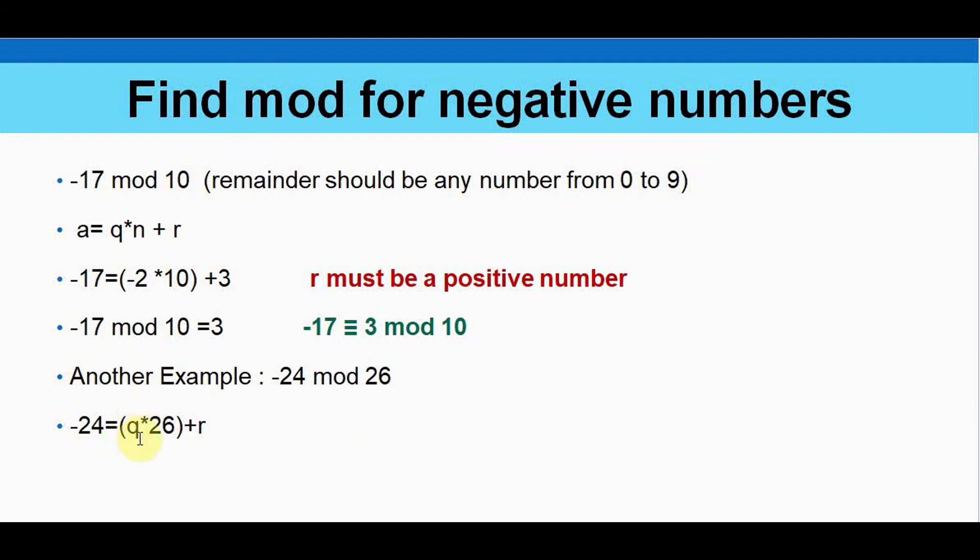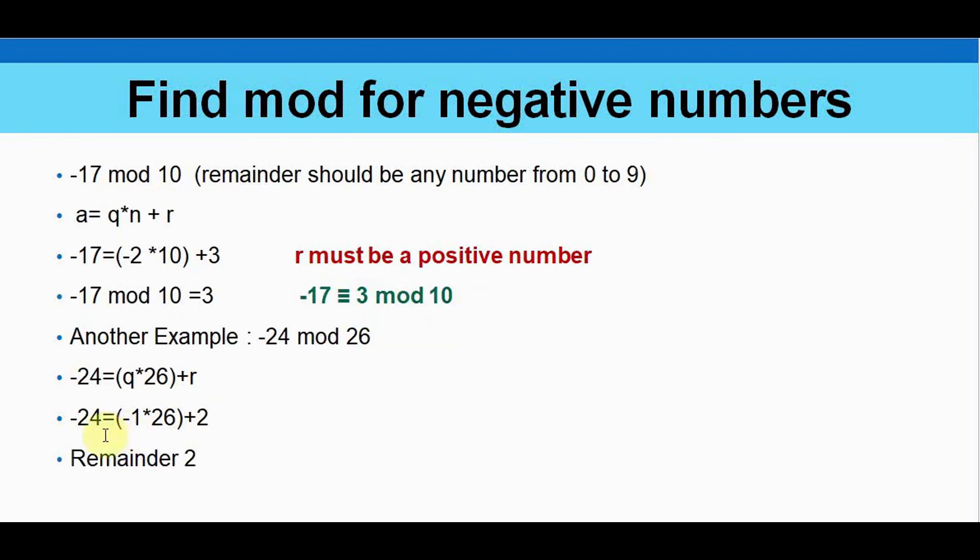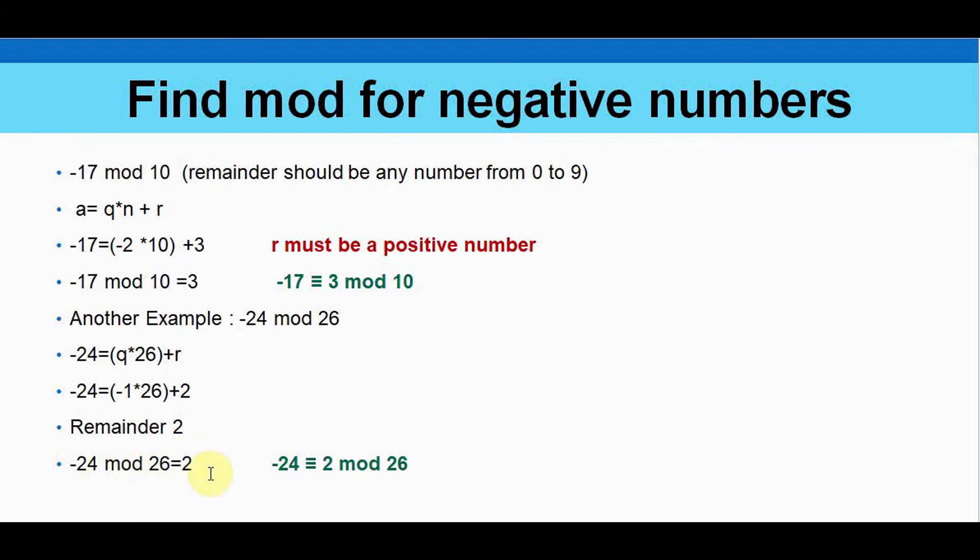So here I can just multiply it with minus 1. Minus 1 into 26 is minus 26 plus 2 will give you minus 24. So that's what we have obtained, the remainder as 2. So it can be represented minus 24 mod 26 equal to 2. Also minus 24 is congruent to 2 mod 26.